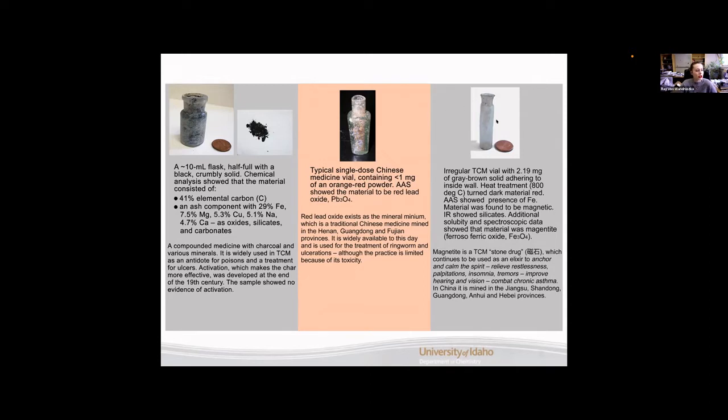Our third artifact from the San Jose Market Street Chinatown site was this very irregular TCM vial. It contains 2.19 milligrams of a gray brown solid inside of it. Heat treatment at 800 degrees centigrade turned this material dark red and atomic absorption spectroscopy showed the presence of iron. These are kind of two clues that are building up to our conclusion. We first know that under high temperatures it turned dark red, atomic absorption spectroscopy showed the presence of iron, and then the material inside was found to be magnetic which is our third clue. The infrared spectroscopy showed silicates in there and additional solubility and spectroscopic data showed that the material was magnetite which is one of the forms of iron that is magnetic. So magnetite is a TCM stone drug and is used internally for a multitude of purposes but it is continued to be used as an elixir to anchor and calm the spirit, relieve restlessness, palpitations, insomnia, tremors, improve hearing and vision, and to combat chronic asthma. It is mined in these provinces in China.